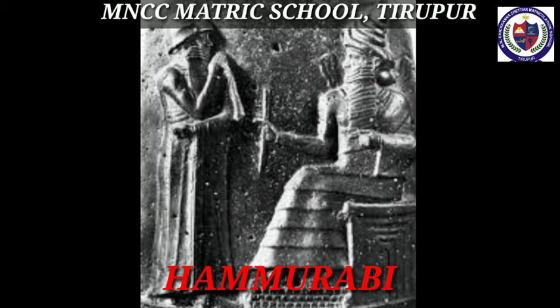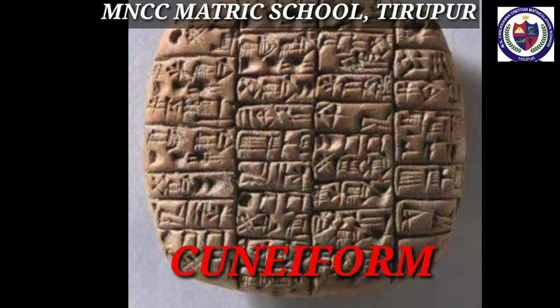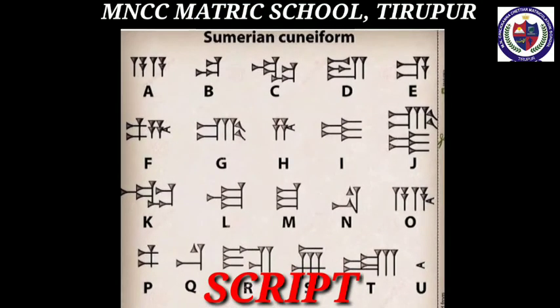Next, cuneiform. Cuneiform is the Sumerian writing system. The shape of the letters is in the form of wedges, and hence it is called cuneiform. Development of script is an important milestone in human history. The writing system began to emerge in Sumeria in the latter part of the fourth millennium BC.